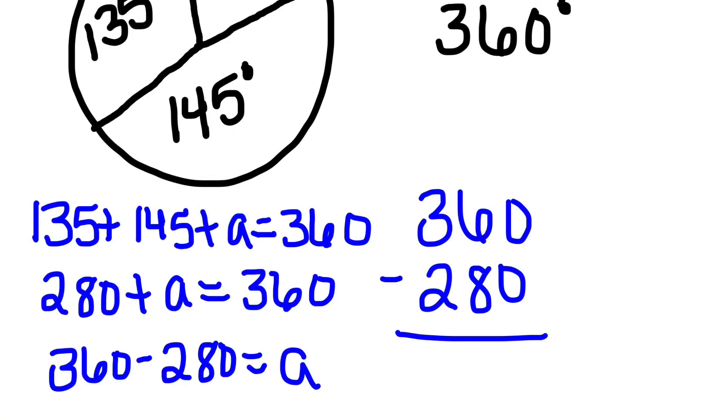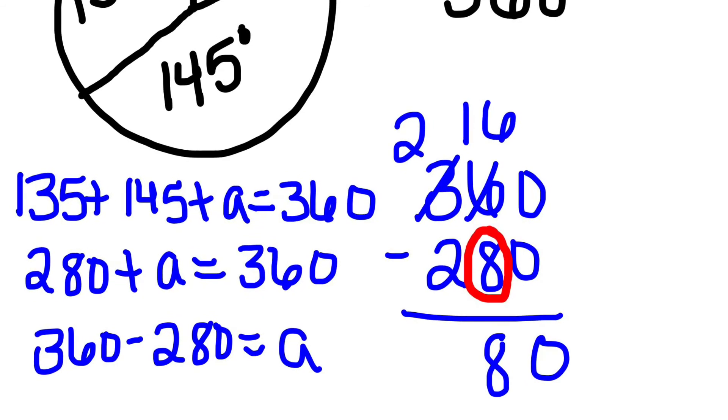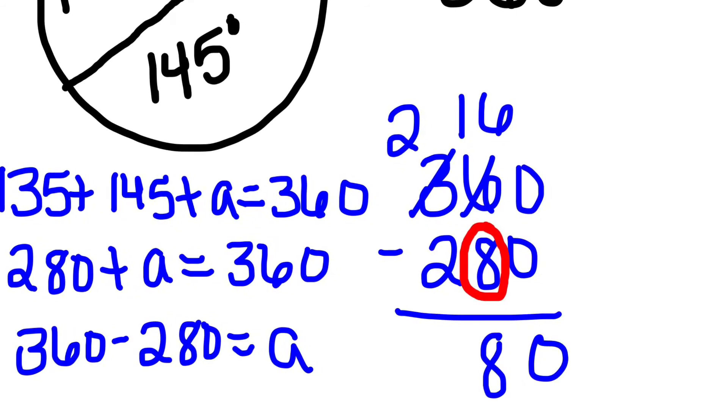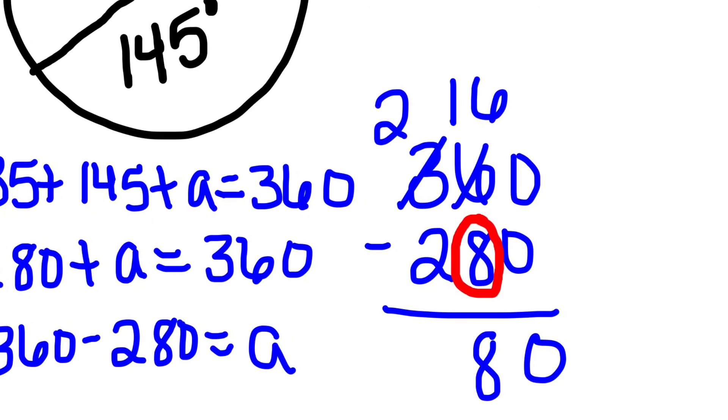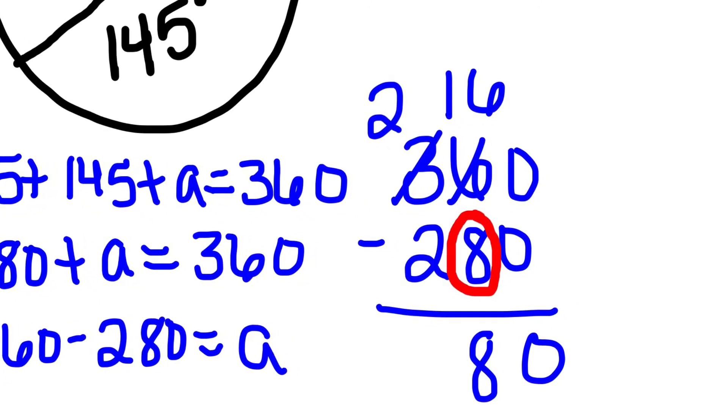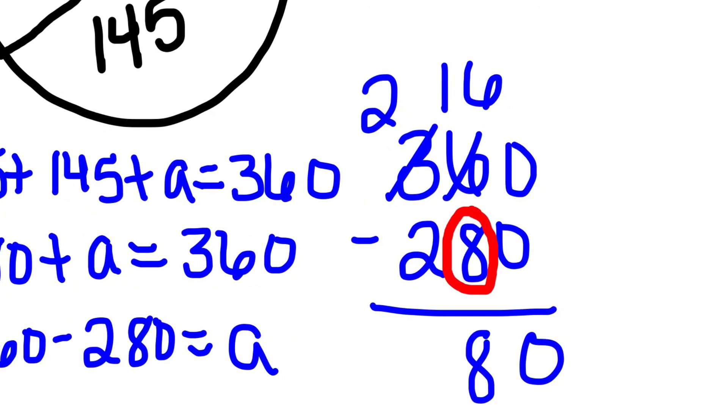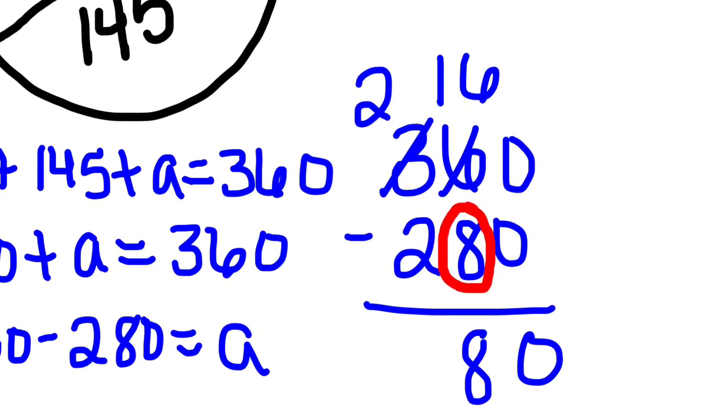Once I get my problem set up to subtract, I notice that I can't subtract the eight tens from the six tens. So I begin to regroup, changing my three hundreds to two hundreds and my six tens to 16 tens.